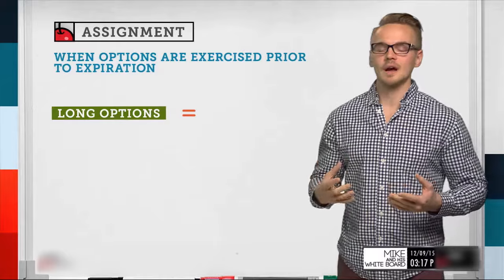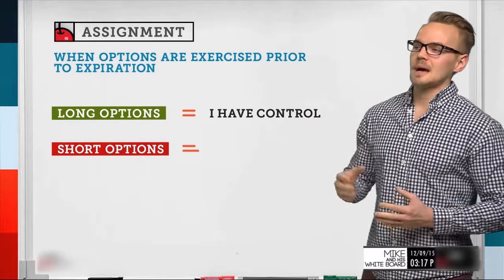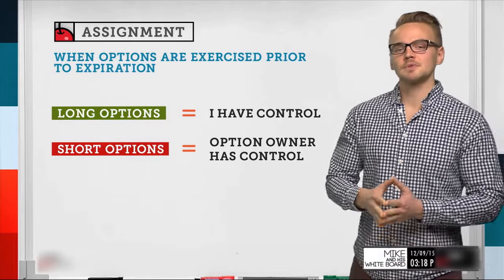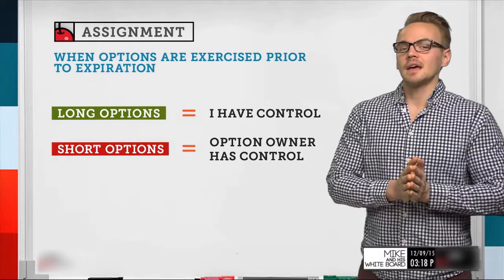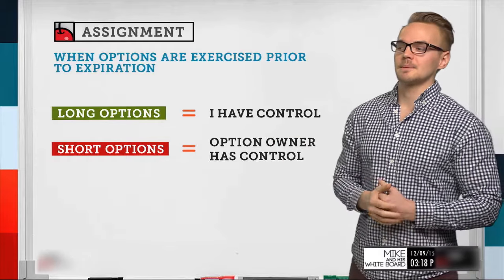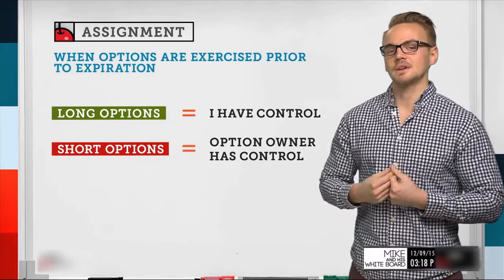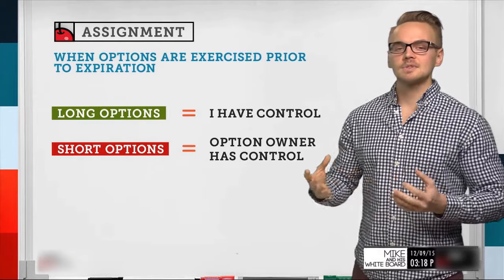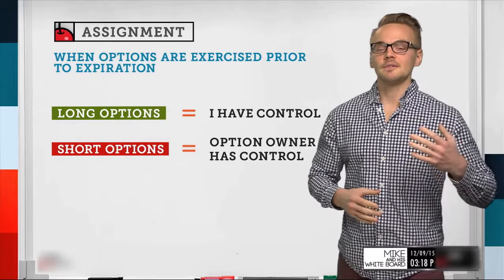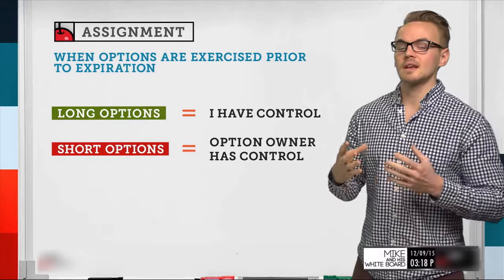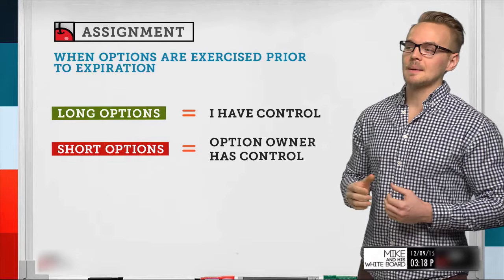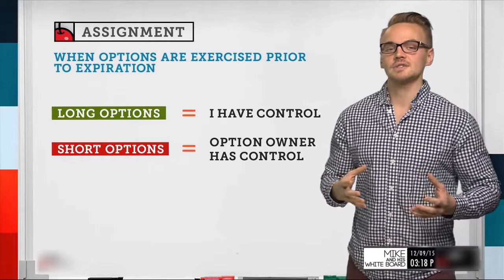When we talk about option assignment, we're basically talking about when options are exercised prior to expiration. One thing to note is the difference between buying and selling an option, and who has control over assignment. If I'm long an option, I have control over assignment because I can exercise it — as long as we're dealing with a U.S. equity option, not an index like SPX or VIX, which are European options that can't be exercised early.